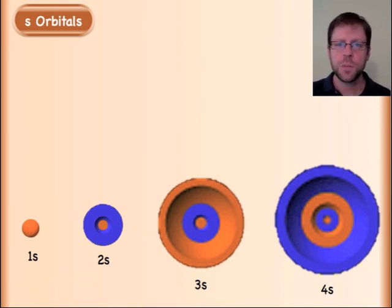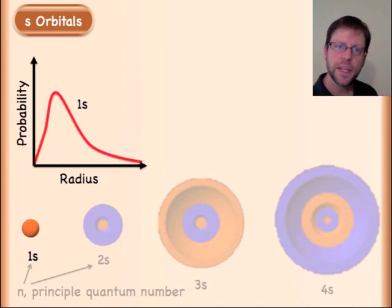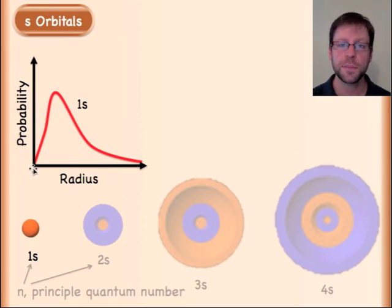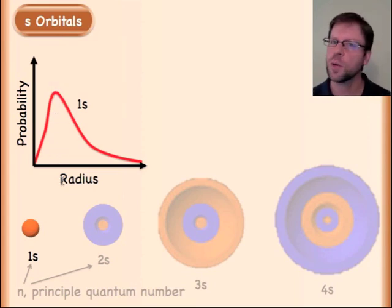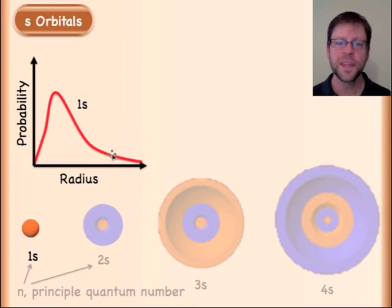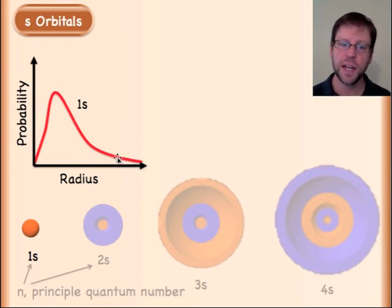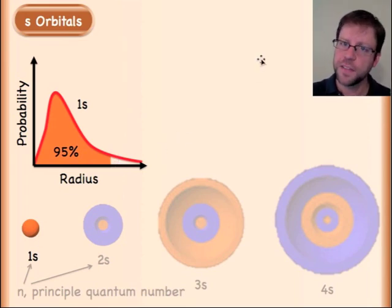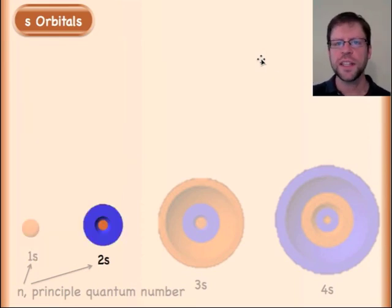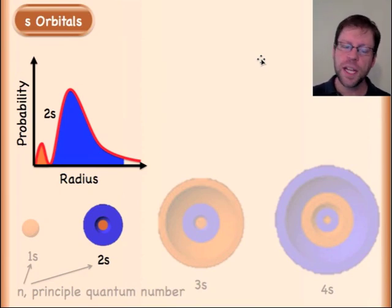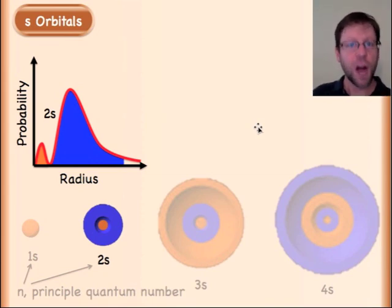Let's look at each of these individually. I'm showing a chart of the probability of finding the electron versus the radius away from the center. There is a point of most probable radius where you would most likely find the electron. We cap the probability off at 95% and draw the boundary of the sphere at that line. The 1s orbital has zero nodes — very low energy.